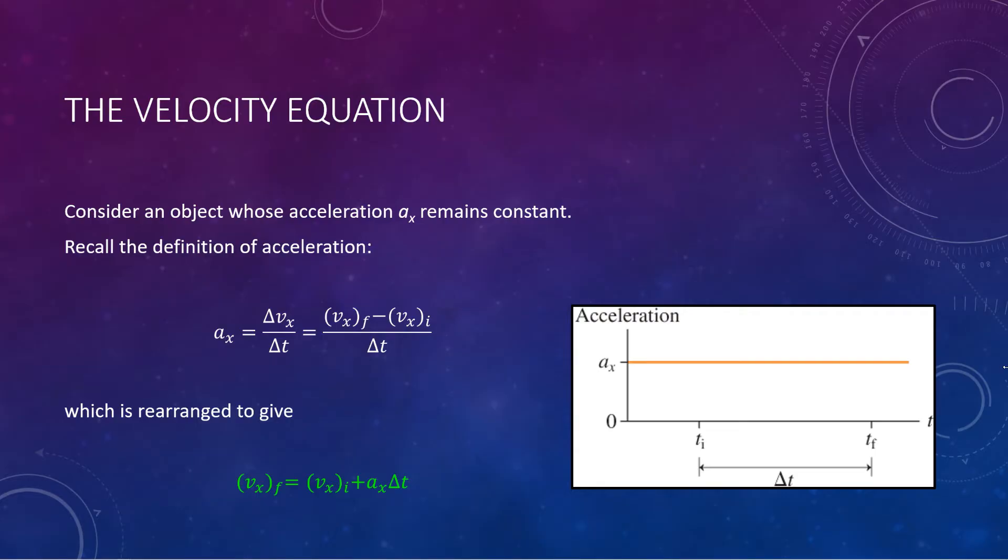So let's take a look at our first equation. Consider an object whose acceleration ax remains constant during the time interval delta t of its motion. At the beginning of this interval, the object has an initial velocity vx initial and an initial position x initial. The object's velocity is changing because it's accelerating.